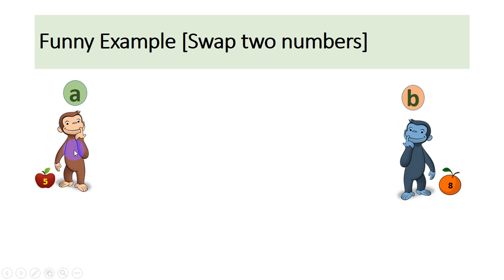And this monkey b is having orange. Let's assume that a doesn't like apple and b doesn't like orange. Now they want, they are thinking of exchanging the fruits but they don't trust each other. So this monkey thinks that the moment you give apple to this, this will run with both apple and orange.